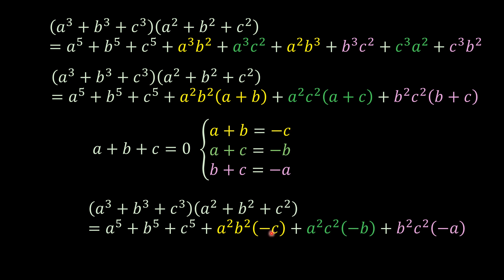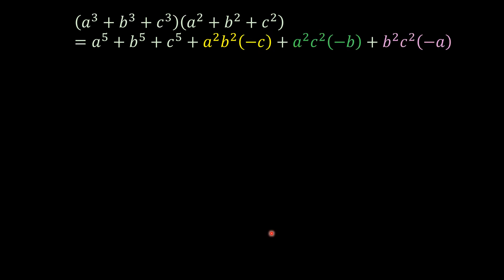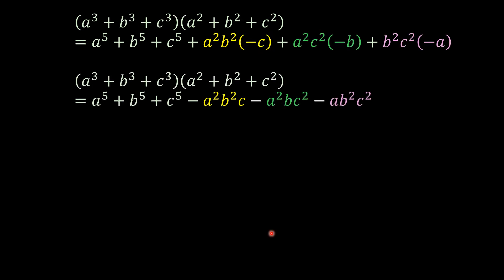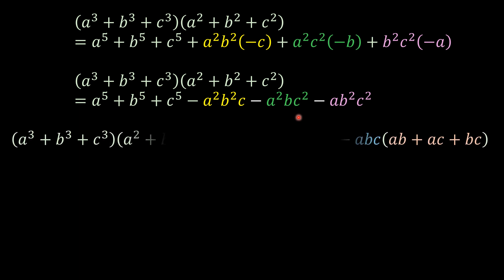And we're just going to have this and now I'm going to multiply these terms here. So we got this one here. Now you see that we have a, b, c — I'm going to factor out abc — and then we have this one here.